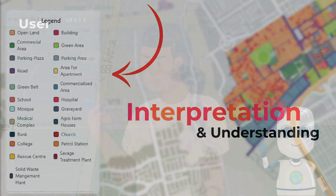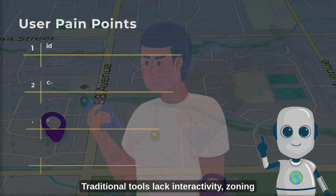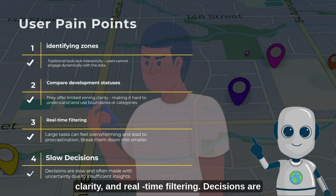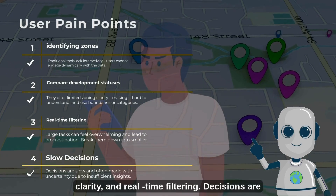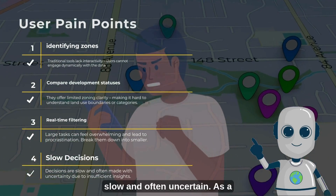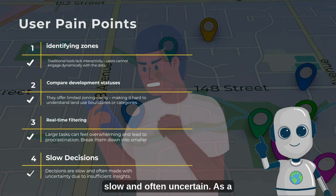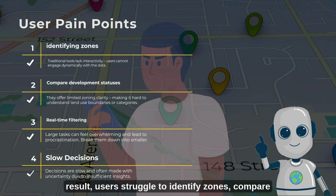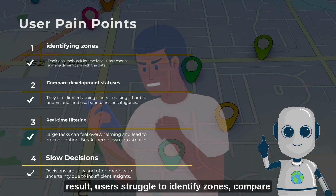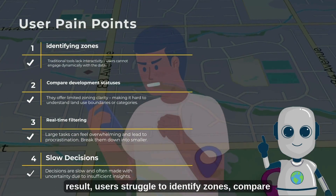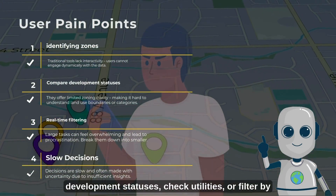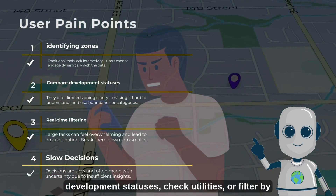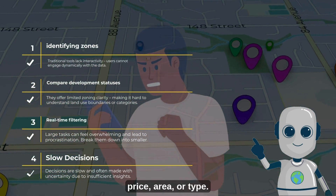Traditional tools lack interactivity, zoning clarity, and real-time filtering — decisions are slow and often uncertain. As a result, users struggle to identify zones, compare development statuses, check utilities, or filter by price, area, or type.